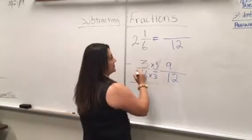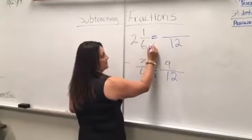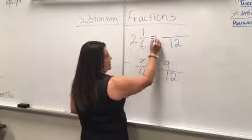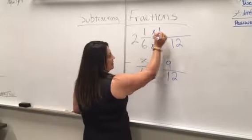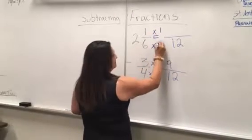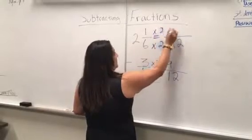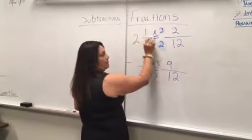Moving on to the next fraction, 6 times 2 equals 12. Multiply the numerator by 2 as well: 1 times 2 equals 2, giving us 2/12.